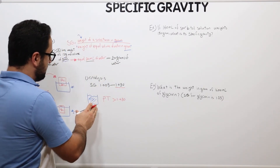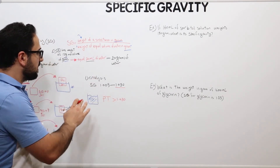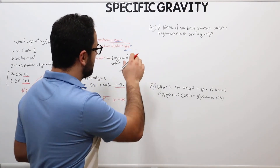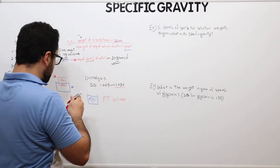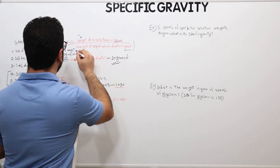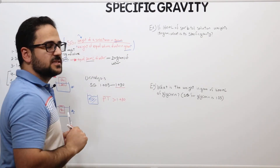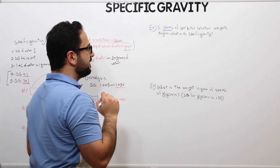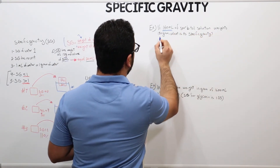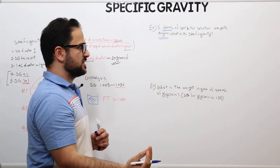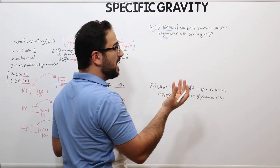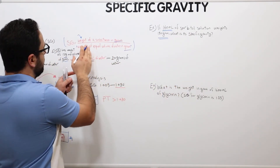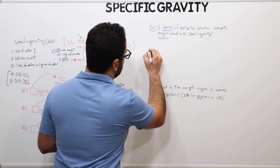And that's how specific gravity is used in urine analysis. Now let's look into some examples of how it's used in compounding, applying this formula. Example number one: if 160 milliliters of sorbitol solution weighs 180 grams, what is its specific gravity? So we're looking for specific gravity, and we apply the formula.